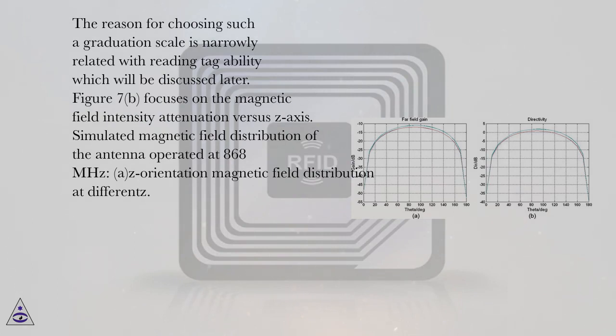Figure 7b focuses on the magnetic field intensity attenuation versus z-axis. Simulated magnetic field distribution of the antenna operated at 868 MHz: z-orientation magnetic field distribution at different heights.